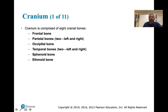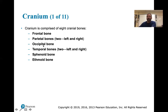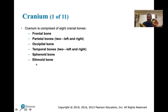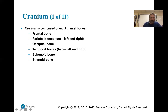The cranium is composed of eight cranial bones: the frontal bone, bilateral parietal bones, occipital bone covering the occipital lobe, temporal bones (meaning time, for the graying temples), sphenoid bone, and ethmoid bone. You may have heard of the sphenoid sinuses or ethmoid sinuses and their bony components.